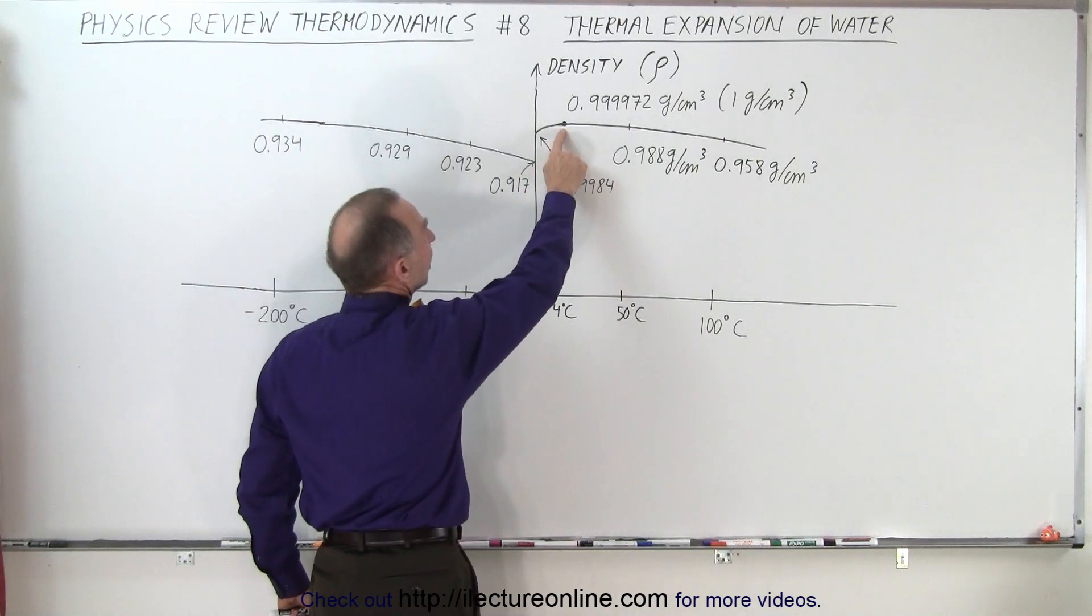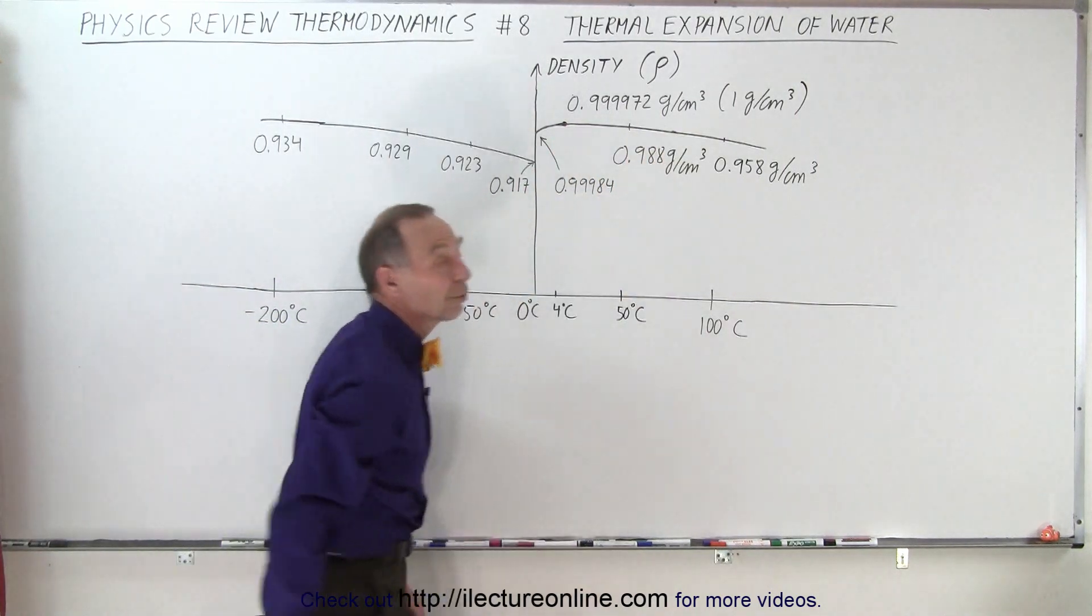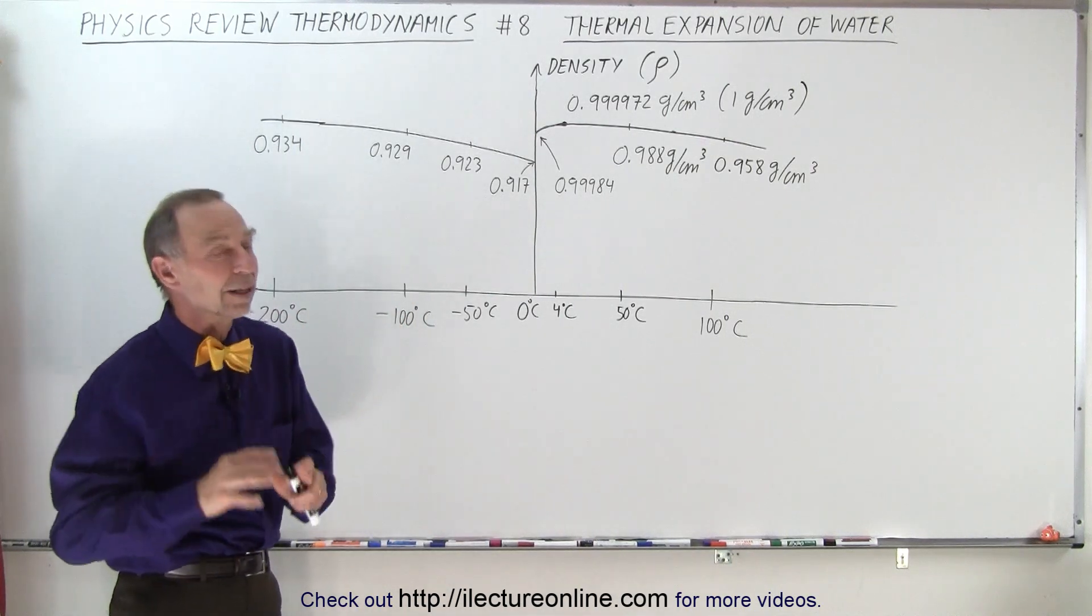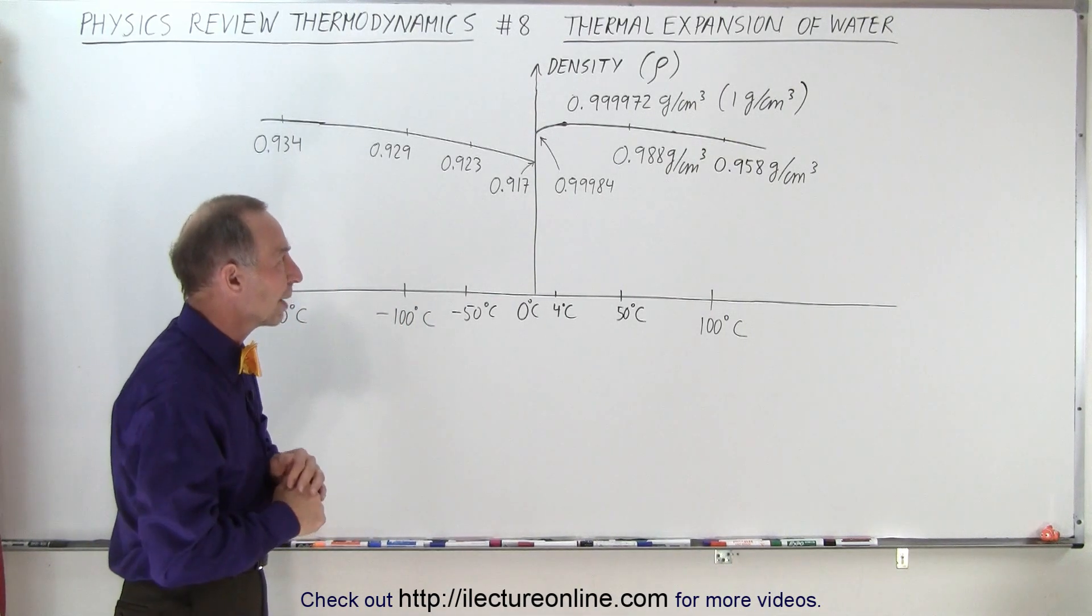At 4 degrees Celsius, it is essentially one gram per cubic centimeter. But latest measurement with special techniques said that it's not quite that much, but we can just call it one gram per cubic centimeter.